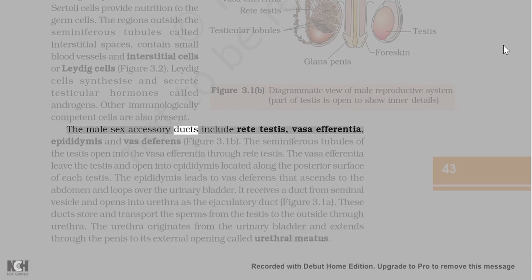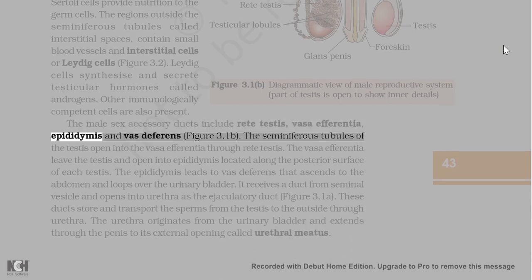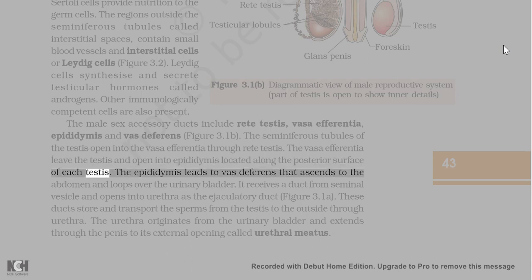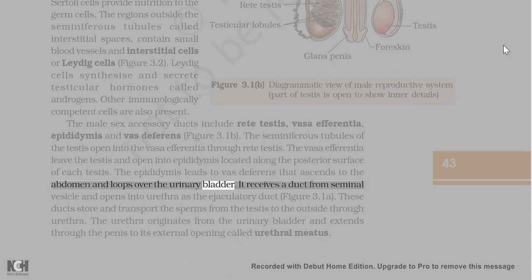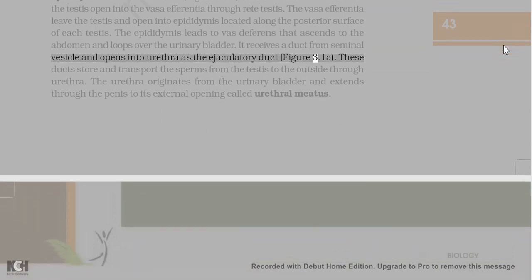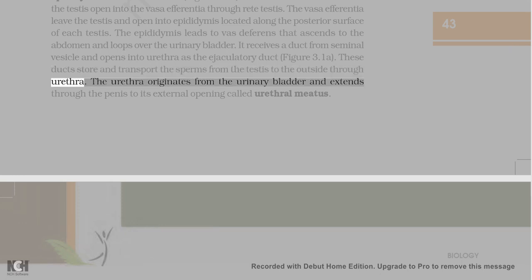The male sex accessory ducts include rete testis, vasa efferentia, epididymis, and vas deferens. The seminiferous tubules of the testis open into the vasa efferentia through rete testis. The vasa efferentia leave the testis and open into epididymis located along the posterior surface of each testis. The epididymis leads to vas deferens that ascends to the abdomen and loops over the urinary bladder. It receives a duct from seminal vesicle and opens into urethra as the ejaculatory duct. These ducts store and transport the sperms from the testis to the outside through urethra. The urethra originates from the urinary bladder and extends through the penis to its external opening called urethral meatus.